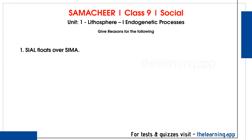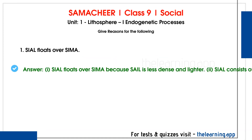Next: give reasons for the following. First question — why does Sial float over Sima? Correct answer: Sial floats over Sima because Sial, which is silica and aluminium, is less dense and lighter than Sima, which is silica and magnesium. Because Sial is lighter and less dense, it floats over the denser Sima layer of the mantle.